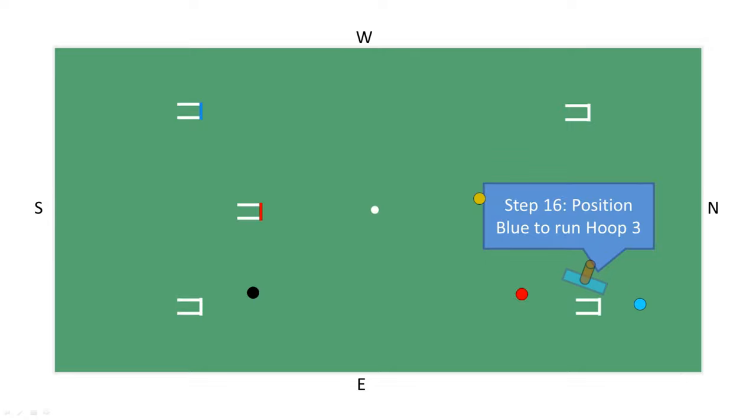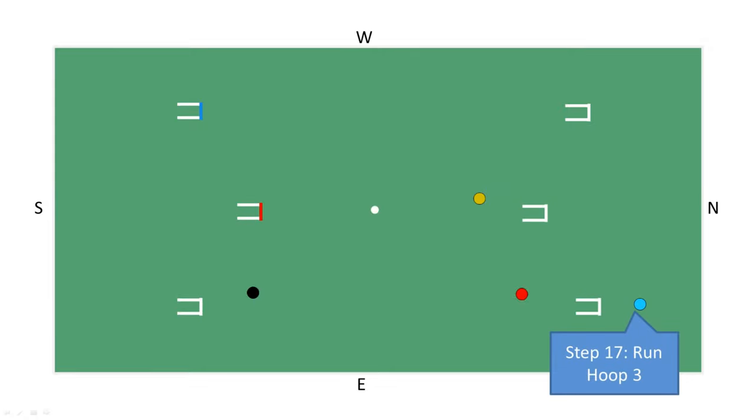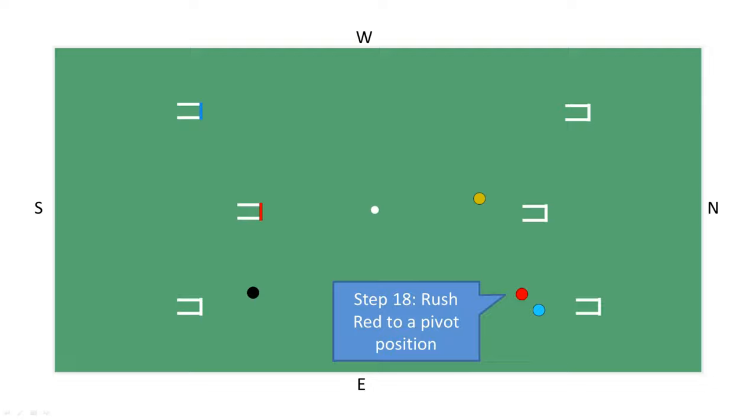Blue then sets up in front of hoop 3 and then runs hoop 3 where red is available to gain two continuation shots. Blue then rushes red to a pivot position for future use.